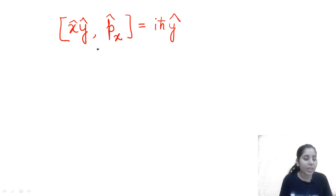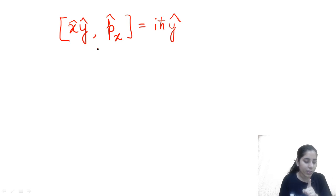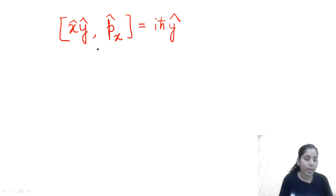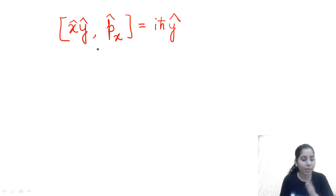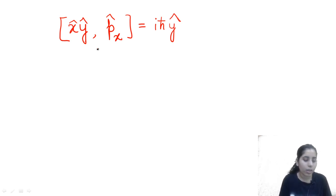For [A, B^n], the result is n times B^(n-1) times the commutator bracket [A, B].